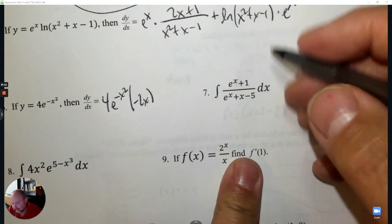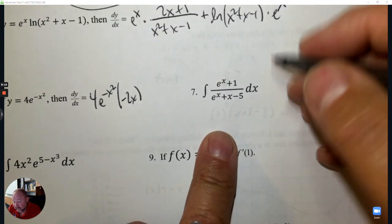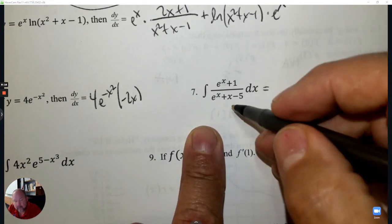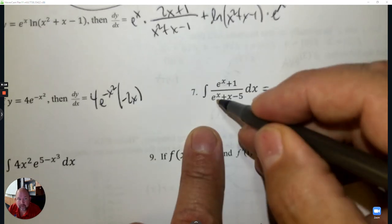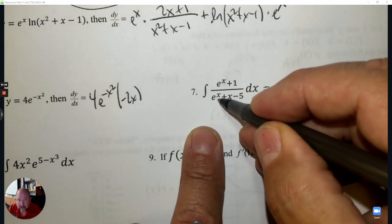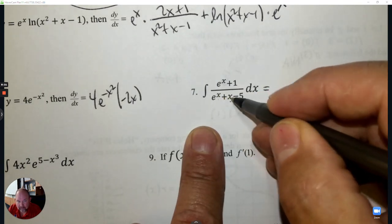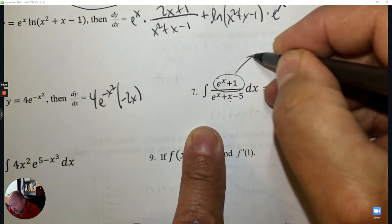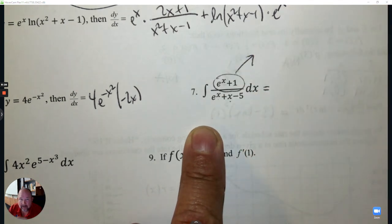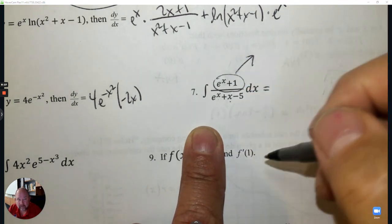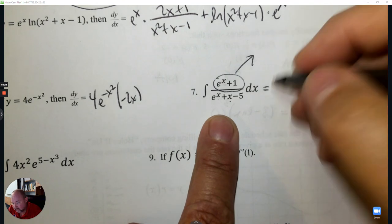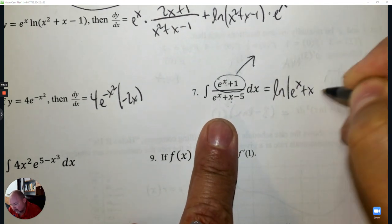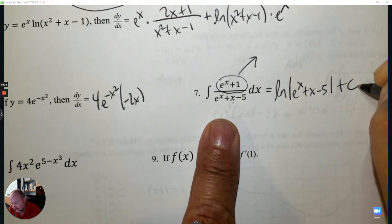Number 7: This is an integration question — I need to know where the hook comes from. The hook comes from the denominator. The derivative of the denominator is e^x + 1, which is exactly what the numerator is. The hook matches exactly, so no fraction in front. This is a logarithm — what you see in the denominator goes inside the logarithm, plus C.